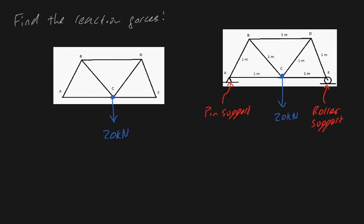A pin support prevents both horizontal and vertical movement simultaneously, so you're going to have two reaction forces at point A: a reaction force in the vertical direction, which I'll call A subscript Y, and a force in the horizontal direction, which I'll call A subscript X. A roller support only prevents movement in the vertical direction, so you're only going to have a reaction force E subscript Y in the vertical direction.